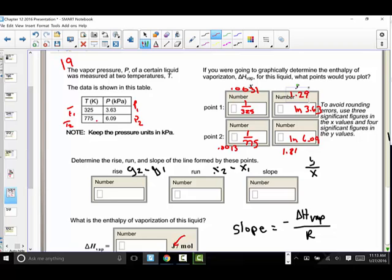To find the rise, we know that it's the change in y. So just thinking about your graph, this would be called the rise and this is called the run. So the delta y, we want to find the difference between the two points on the y-axis. So 1.81 minus 1.29. 1.81 minus 1.29 gives me a delta y of 0.52.